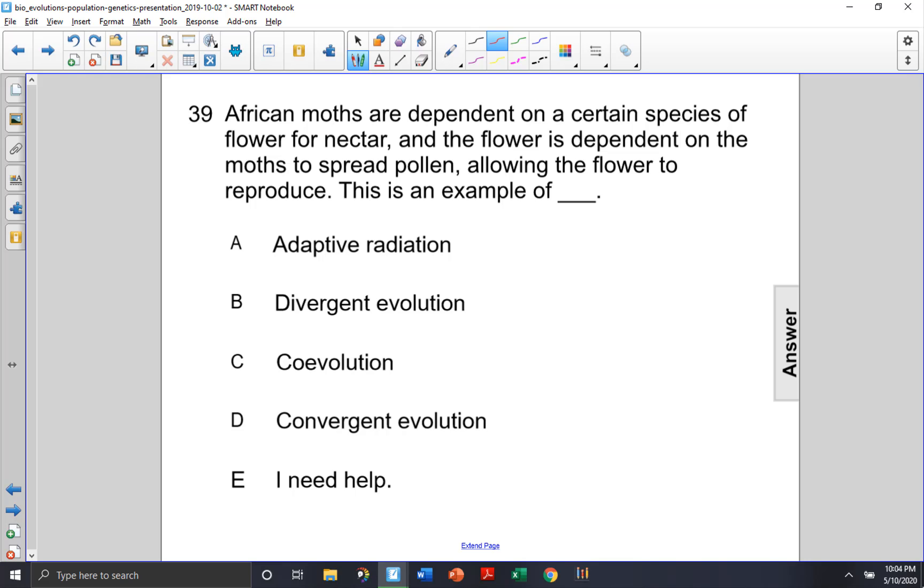African moths are dependent on a certain species of flower for nectar, and the flower is dependent on the moths to spread pollen, allowing the flower to reproduce. This is an example of what?